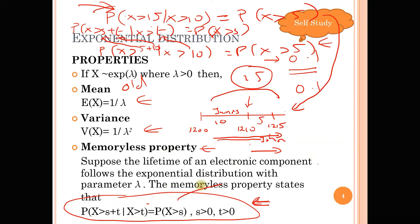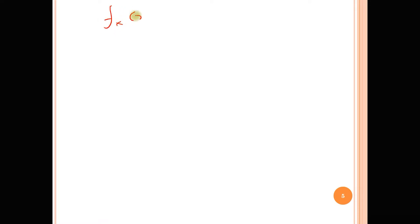We have understood intuitively what the memoryless property means. But we should also understand it mathematically. The cumulative distribution function of an exponential distribution involves e^(−λx), as we saw earlier: f(x) = λ·e^(−λx) for x > 0 and λ > 0.